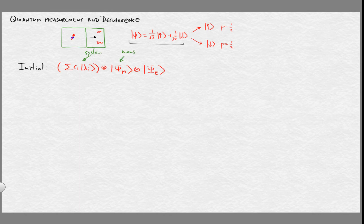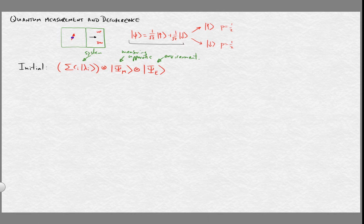So this is the system, this is the state of the measuring apparatus, and this is the state of the environment. What happens in a measurement is that the measuring device interacts with the quantum system we're measuring. As a result of that interaction, the state of the quantum system becomes entangled with the state of the measuring device. The measuring device has a couple of possible states — up and down — with a physical arrow that points to up if the device reads up, and down if it reads down.